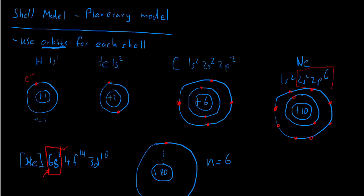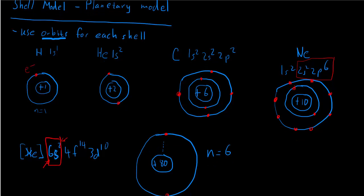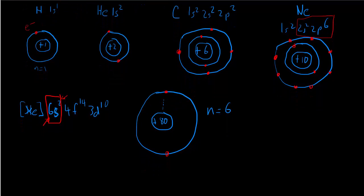If I were really careful I'd draw in all those inner rings too, but the outer ring turns out to be most important in chemistry. There's my N equals 6 orbit with the two electrons, and the outer orbit is the one we care about most often in chemistry.